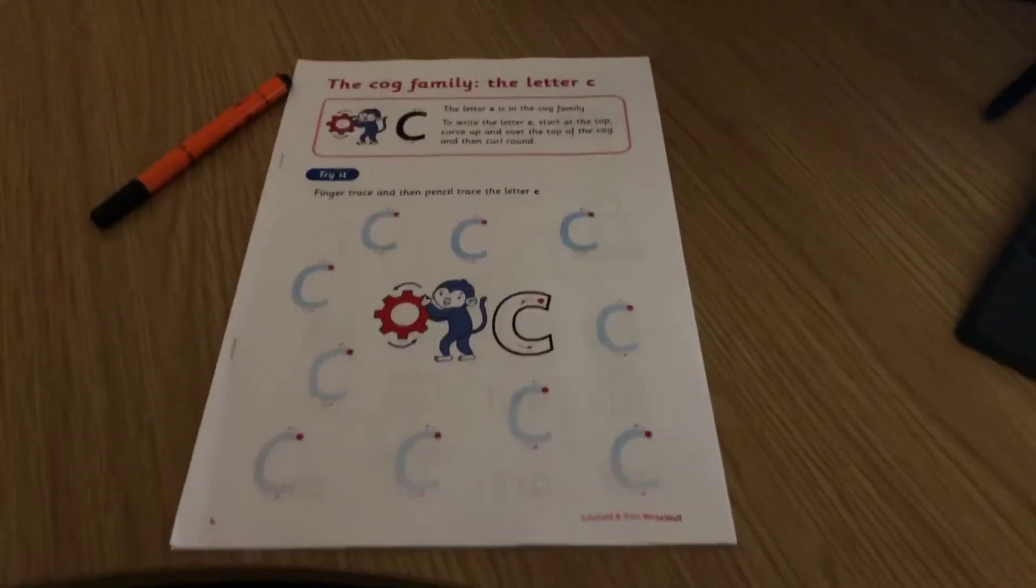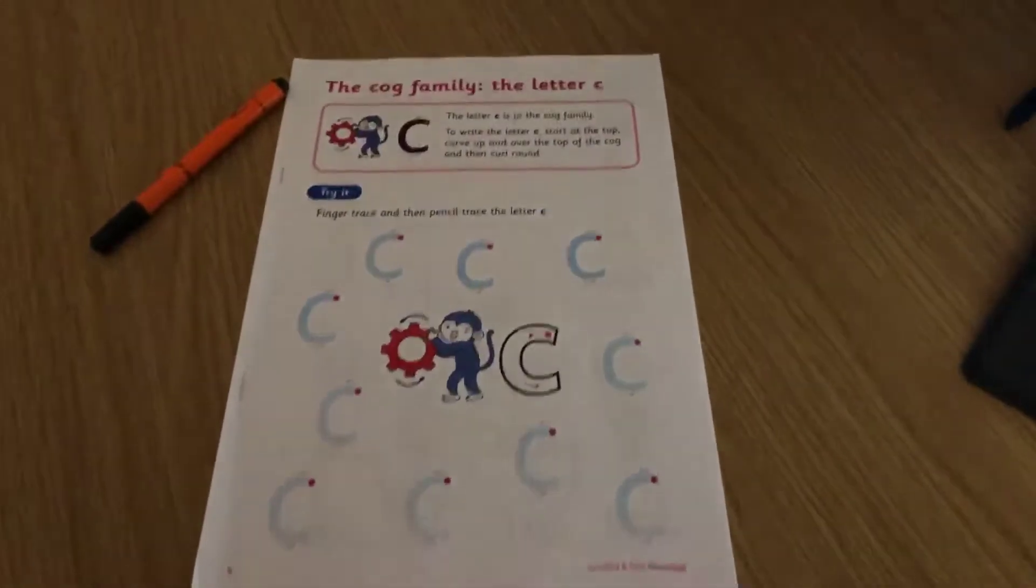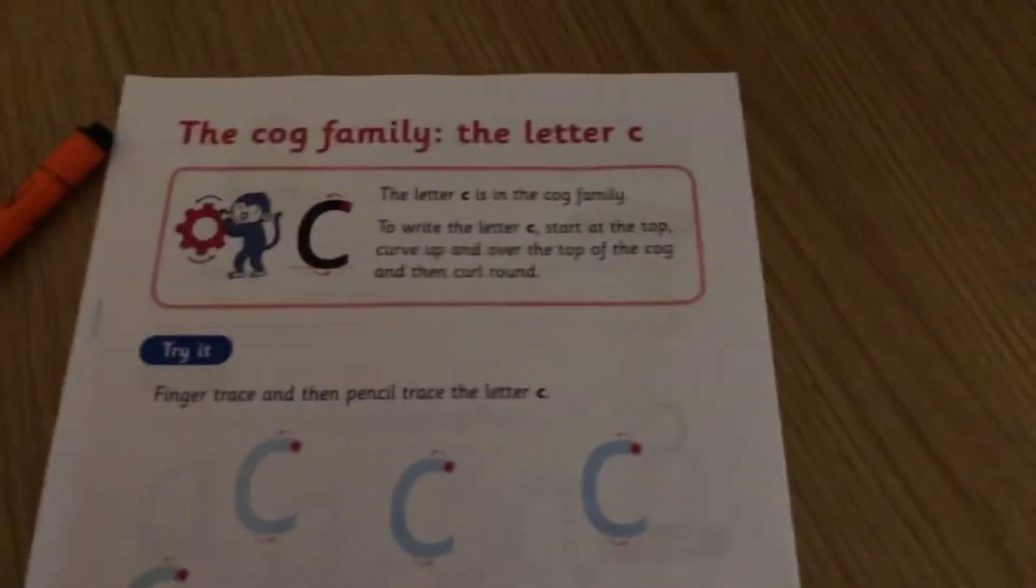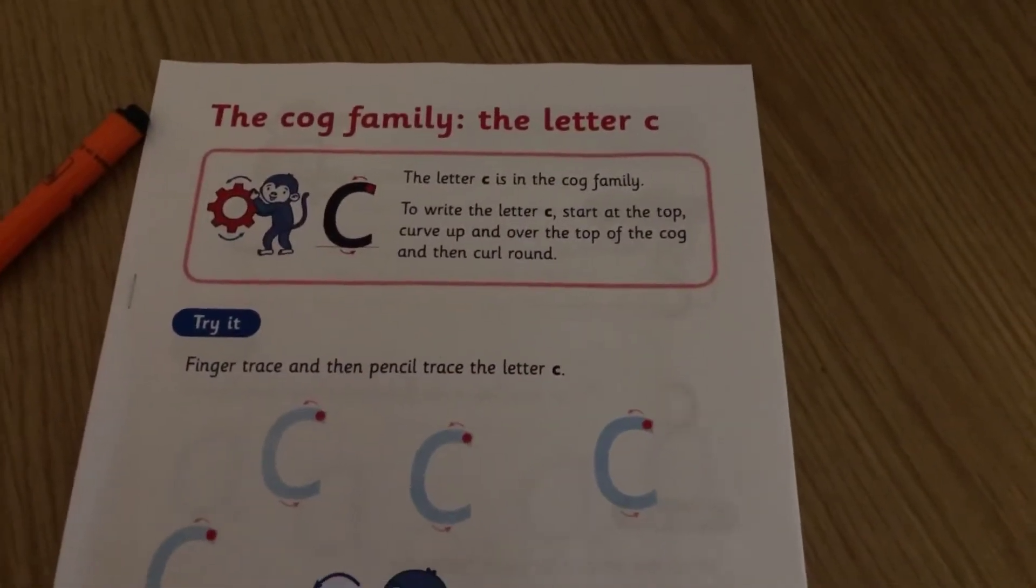Okay, so next is handwriting and we're actually going to start a new family of letters. In your pack, you're going to need a sheet that looks like this. It's the booklet and on this booklet it's called the COG family for the letter C.